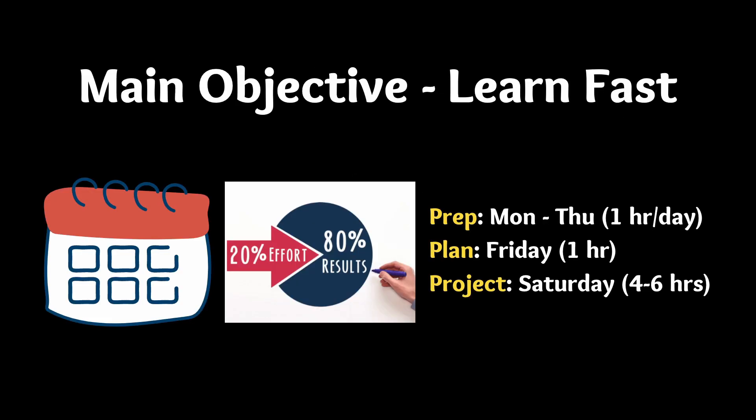The main objective is to give you a framework for learning new technologies so that you can learn it within one week. It won't work for every technology — for example, Rust is known to take a couple of weeks — but for a lot of web technologies you can learn them within one week. There are three steps: first you prepare, then you plan a project, then you execute on that project.